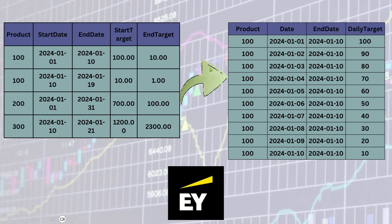Hello everyone, welcome back to my channel Data Sculptor. Today we are going to see another interesting SQL question. We have a table called 'targets' with columns: product, start date, end date, start target, and end target. For each product you have a start date, end date, start target, and end target.